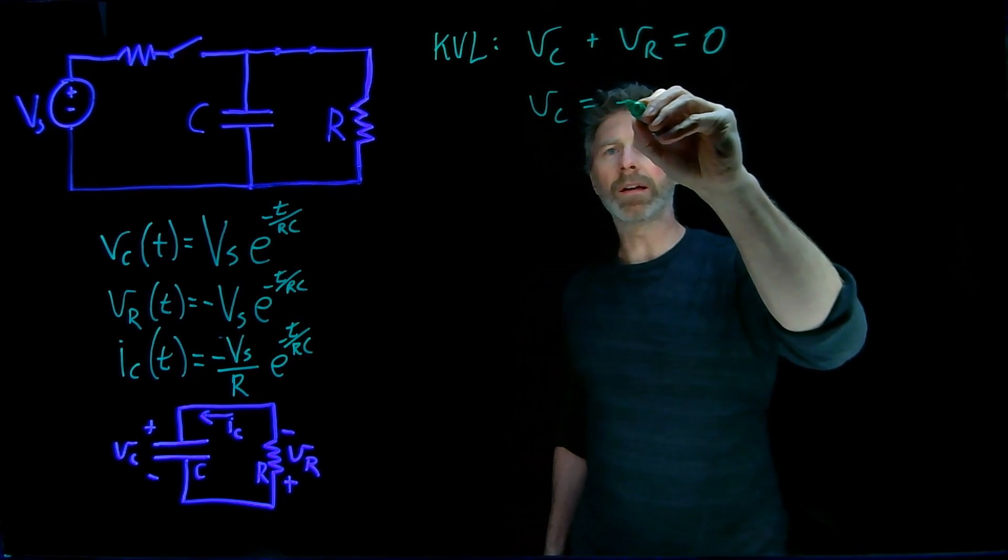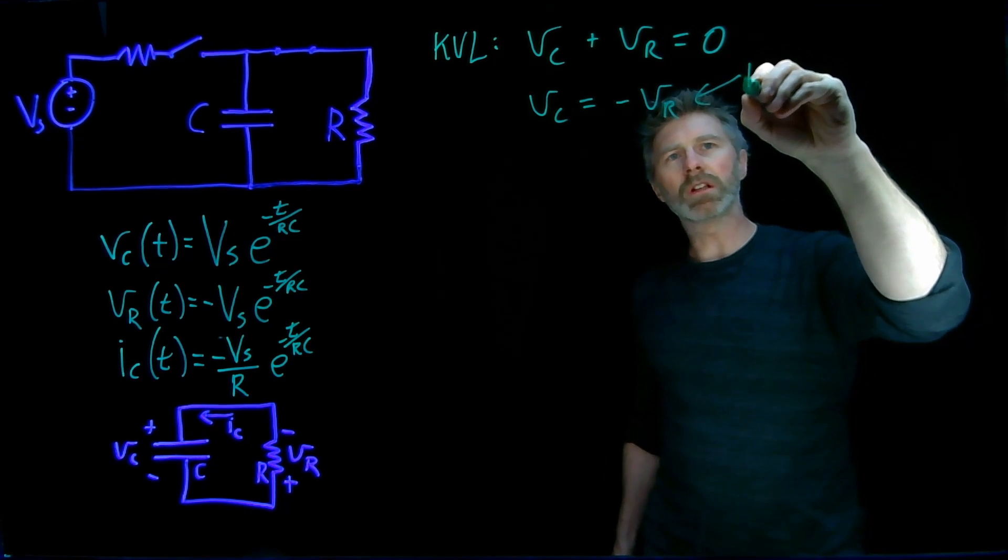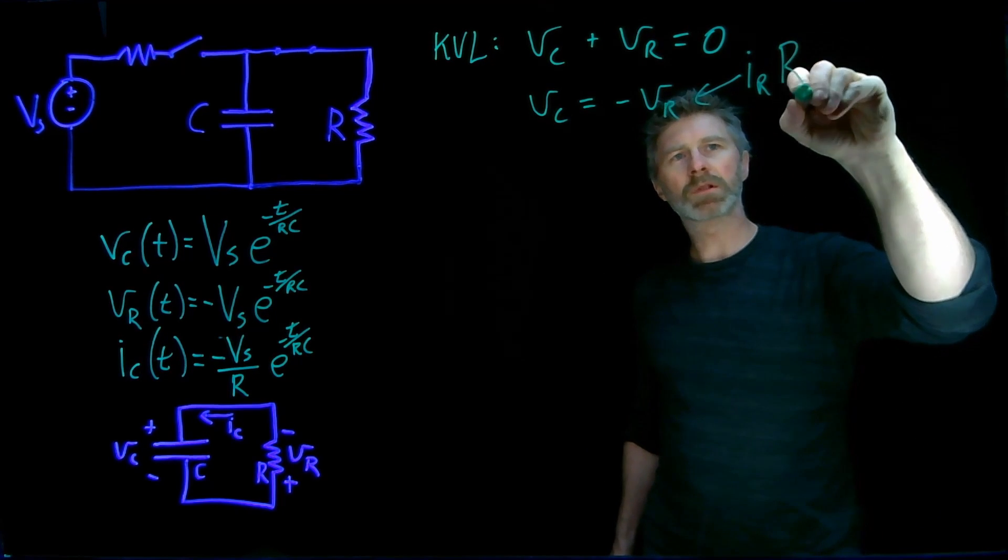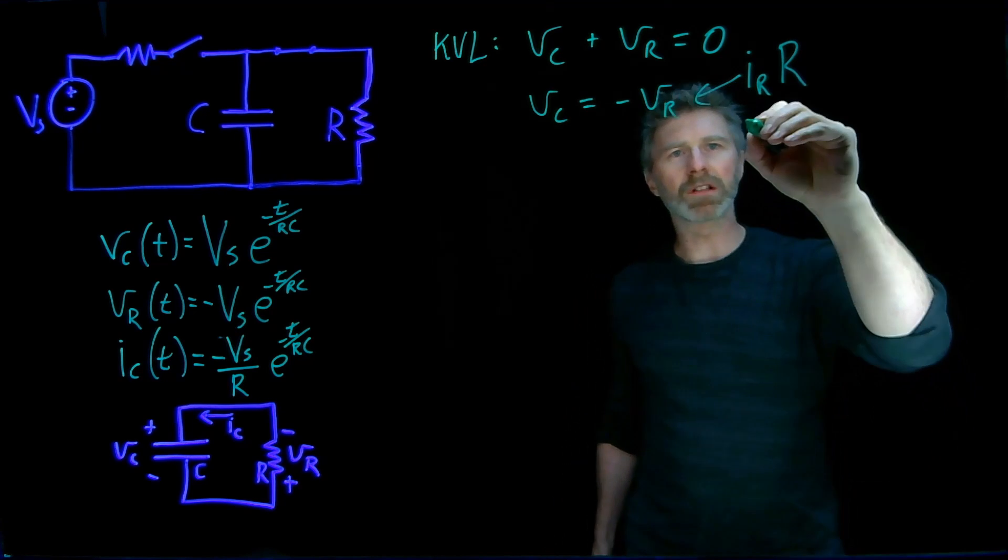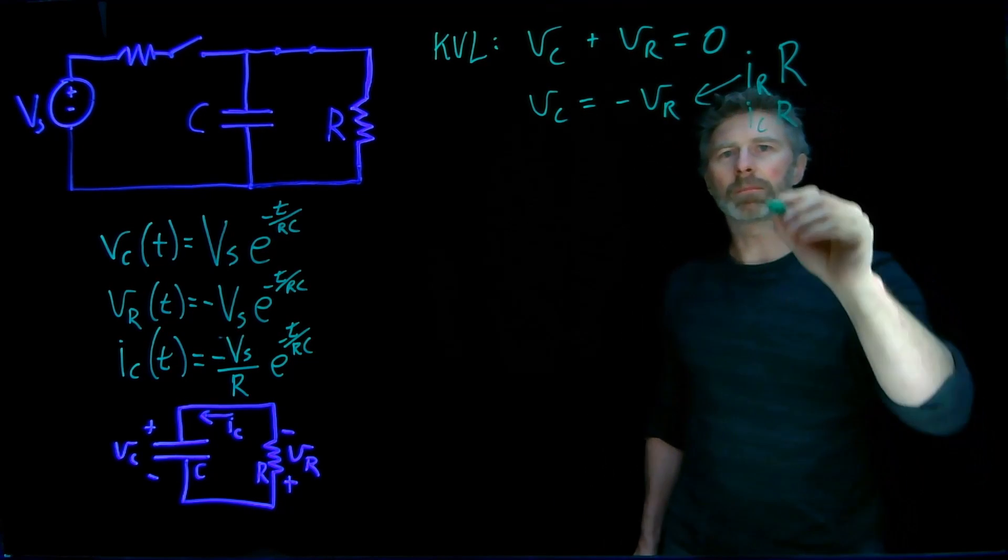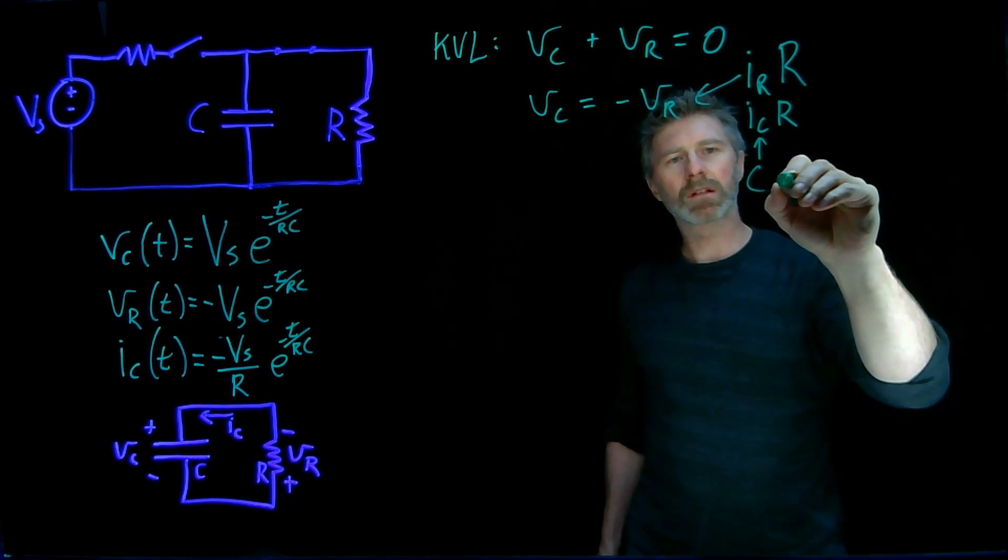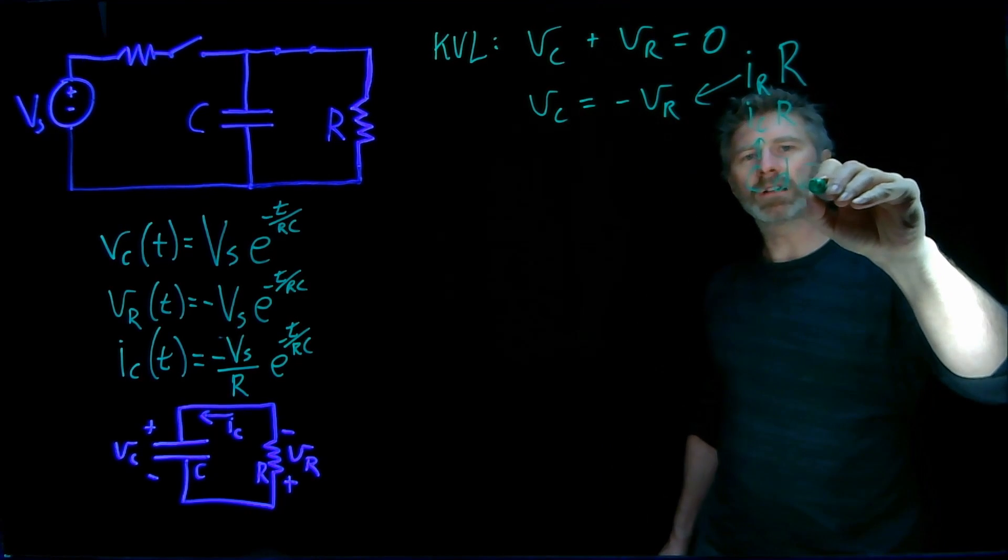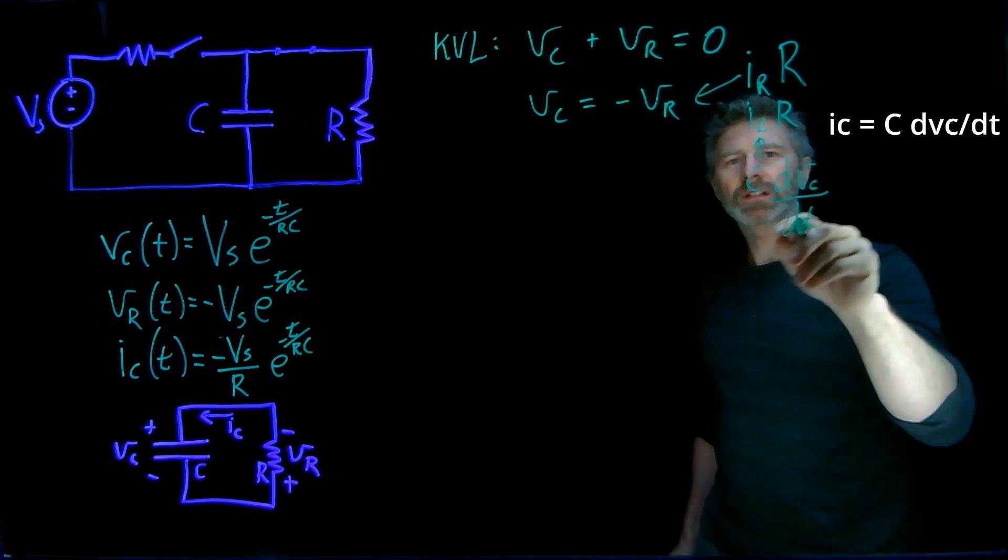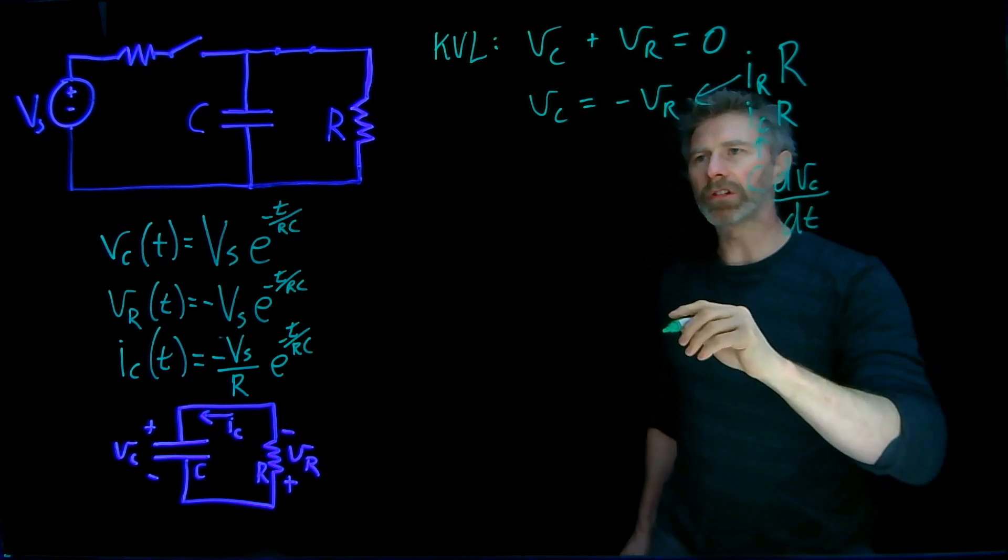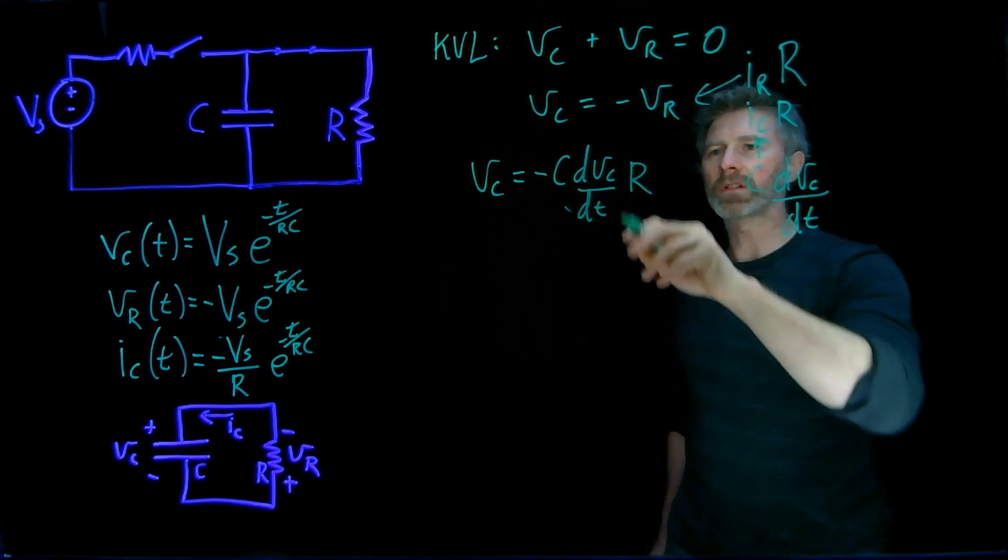We can rewrite that. We also know that the voltage across the resistor is equal to the current through the resistor times the resistance. Since the current through the resistor and the current through the capacitor are the same, that's going to be the same as ICR. But remember what current through a capacitor is? It's capacitance times the rate of change of the voltage across the capacitor over time. So plugging this into this equation, we get that's the current times the resistance.